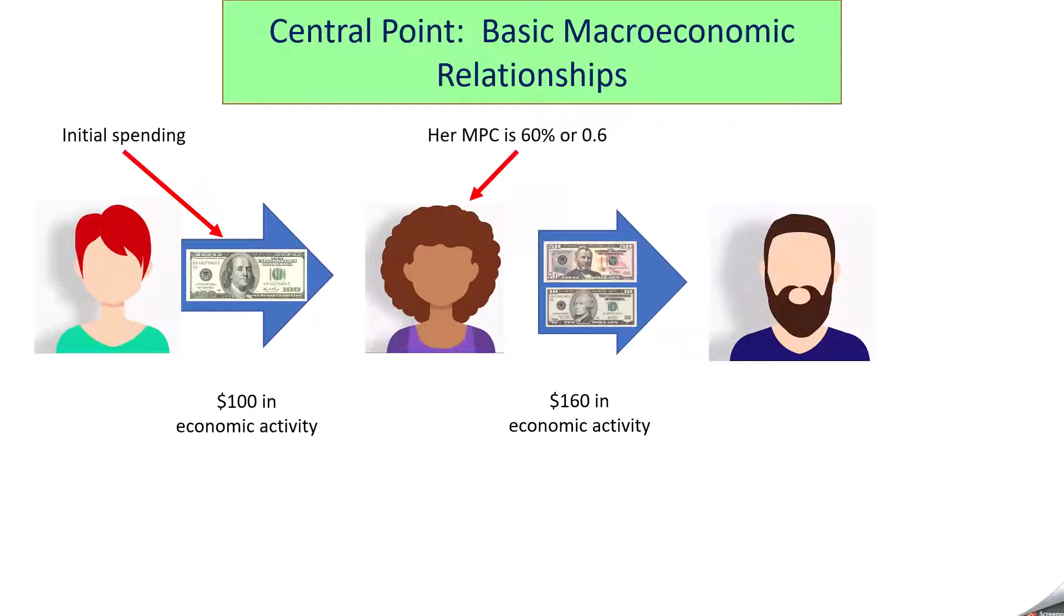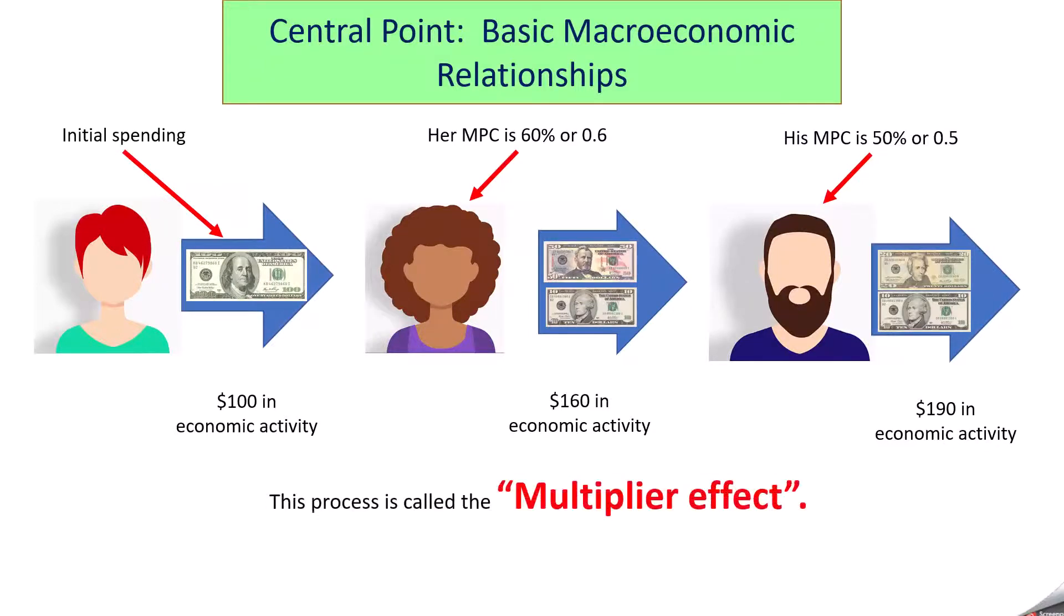So it's multiplying. It's expanding. But we're not done yet because her spending becomes somebody else's income. He earns $60 in additional income and has to decide what he's going to do with it. Maybe his MPC is a .5 or a 50% suggesting he'll spend half of it. He spends $30 of those dollars. We add that to the total and now we see $100 in economic activity here has turned into $190 in economic activity just by the third person. And, of course, this process goes on and on and on each time getting a little smaller depending on how much people save. That whole process is called the multiplier effect.